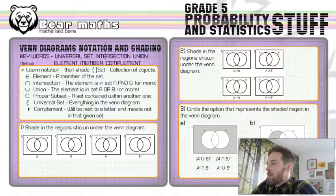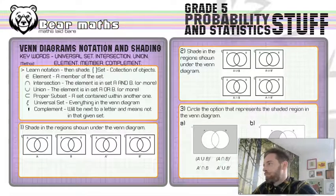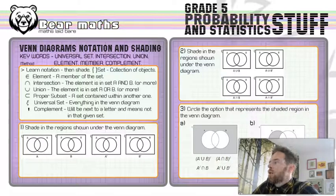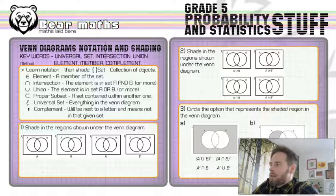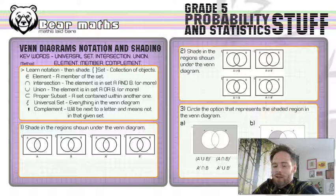Keywords are universal set, intersection, union, element, member, complement. All of these things are going to be explained in the notation bit just below in the method. So, learn the notation, then shade correctly using logical thinking. It's the only way I can really help you with this one.